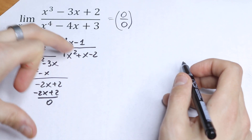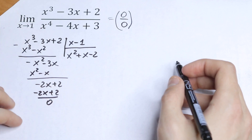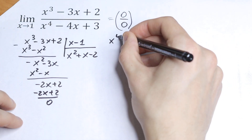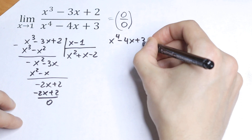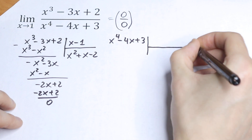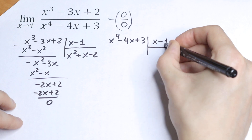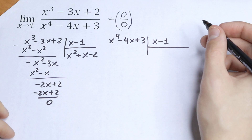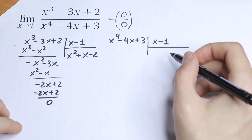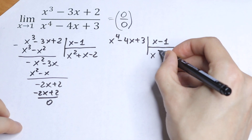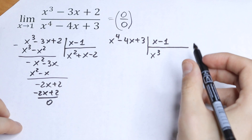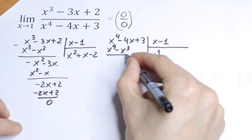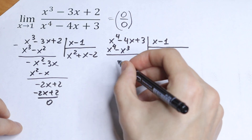Now let's factor x-1 from our denominator using the same method. We have x to the fourth power minus 4x plus 3, and I want to factor out x minus 1. It's a little more complicated because we have a fourth power. We multiply by x-cubed first, giving x to the fourth power minus x-cubed.